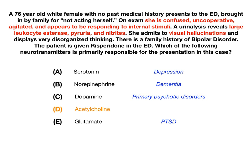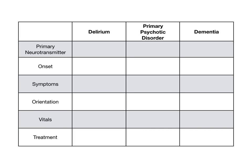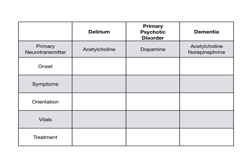The point of this question is to make you think: when you see altered mental status, what's on your differential? Is this delirium, a psychotic disorder, dementia, or something else? To help you organize your thinking, I've made a table. Across the top we'll differentiate delirium, primary psychotic disorders, and dementia. We'll cover the primary neurotransmitter involved, the onset, the symptoms, orientation, vitals, and treatment. For neurotransmitters: delirium is acetylcholine; primary psychotic disorders such as schizophrenia, schizoaffective disorder, and bipolar disorder are all dopamine; and dementia is mostly acetylcholine with a little bit of norepinephrine.